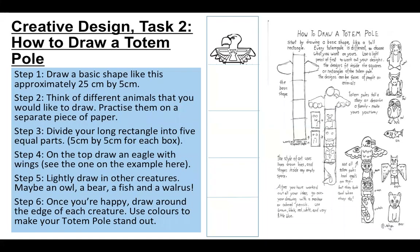Creative design task two — how to draw a totem pole. You will need a piece of A4 paper turned portrait so that you have the longest edge pointing towards you. If you have a ruler, draw two lines 25 centimetres long and make those two lines five centimetres apart. Step two: think of different animals that you would like to draw and practise them on a separate piece of paper. You might choose a walrus, a cat, an owl, a fish or a bear — you need to choose some different creatures that you are going to draw on your totem pole.